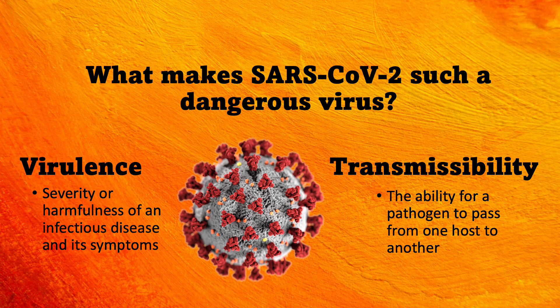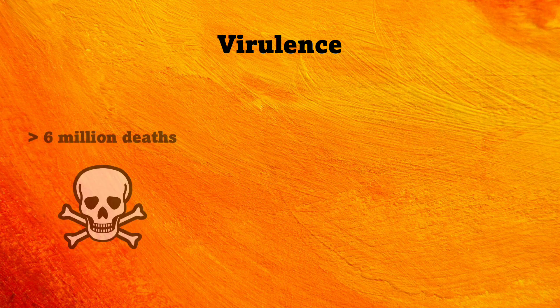In contrast, SARS-CoV-1 from 2002 had high virulence, but it wasn't nearly as transmissible as SARS-CoV-2, so we were able to detect and isolate infected individuals and eradicate it before it could become a public health crisis. So far, COVID-19 infection has been associated with at least 6 million deaths, but mortality isn't the only factor associated with virulence.